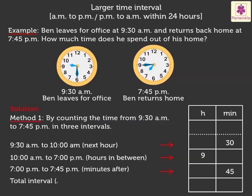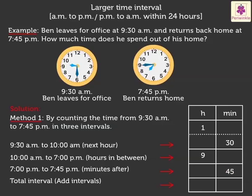Now, add all the intervals. Add the minutes, i.e. 30 plus 45 minutes, which is equal to 1 hour, 15 minutes. Now, add the hours, i.e. 1 plus 9 hours, is equal to 10 hours. Look, we found the time interval.